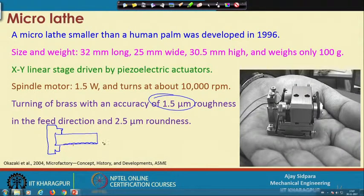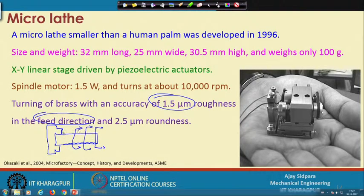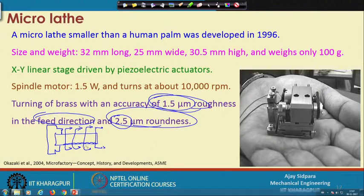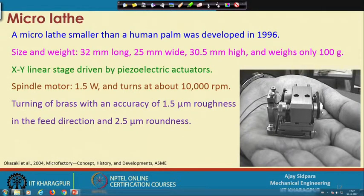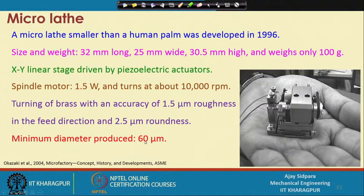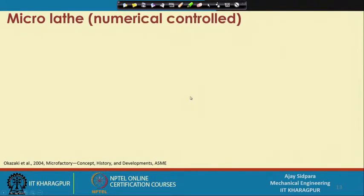An example was given with brass material. Brass was machined with an accuracy of 1.5 micron roughness in the feed direction and 2.5 micron on the roundness. When you do a turning operation, 1.5 micron roughness is in the feed direction, and 2.5 micron refers to the variation in diameter at different cross-sections. The minimum diameter produced was 60 micron. If this accuracy, roundness, and roughness meet your requirements, you do not need a very large machine for the same job.